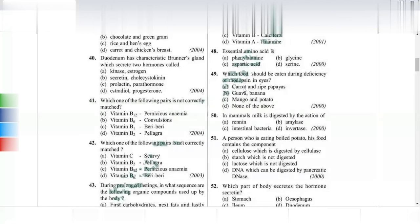A person eating boiled potato — the food component is starch. Options containing starch as undigested are wrong because starch does get digested in our body. The correct answer is D — DNA, which can be digested by pancreatic DNase.